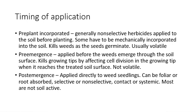There are three general timing applications. First is pre-plant incorporated: you spray onto the soil and incorporate it by disking or turning over the soil. This is necessary because the chemical is volatile — it will turn into a gaseous form easily. Incorporating it prevents volatilization, and then germinating plants are killed on contact. This is most often non-selective.